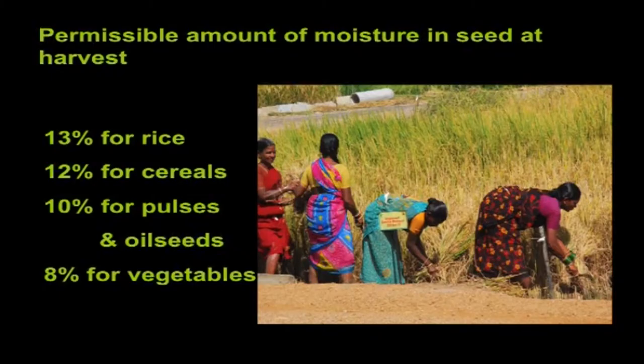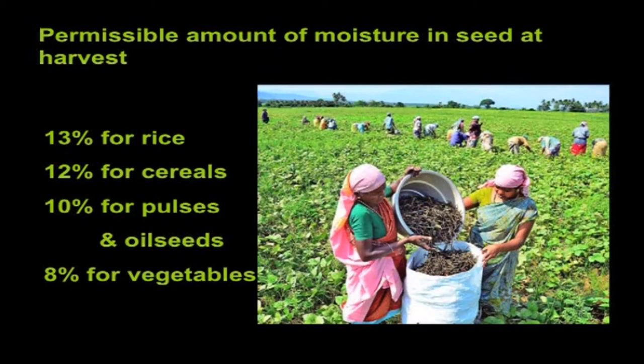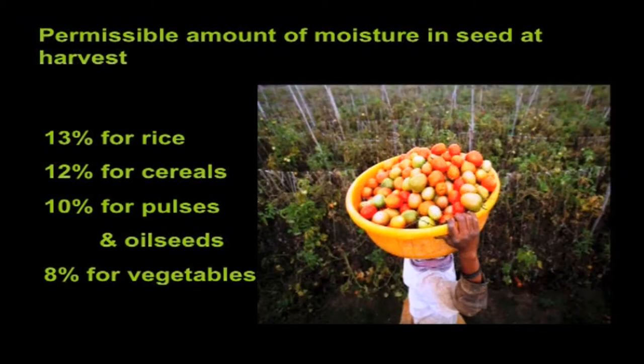Hence, it is better to harvest the seed crop at harvest maturity, which is indicated by a drop in moisture content to 12 percent. Seed certification officials allow for seed moisture of 30 percent in case of rice, 12 percent in case of cereals, 10 percent in case of pulses and oilseeds, and 8 percent for vegetable crops at harvest. Thus, this safe seed moisture helps proper harvest and storage.